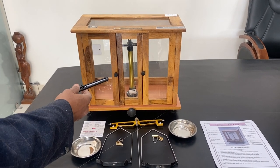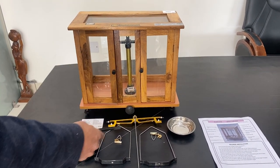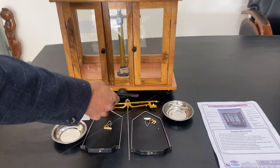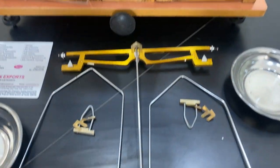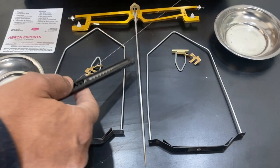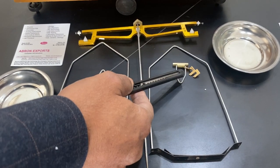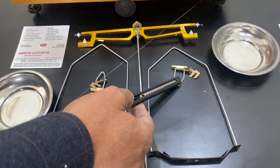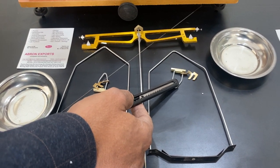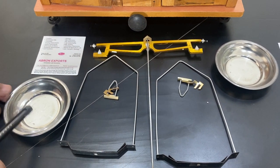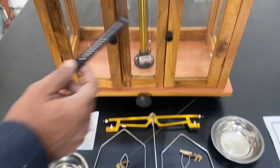This is a physical balance with one beam, one needle, two side wire pan holders, two hanging parts, and two pans. It comes with a wooden box.